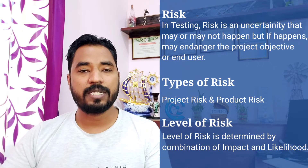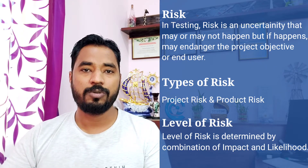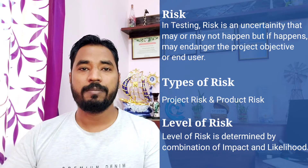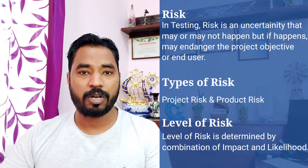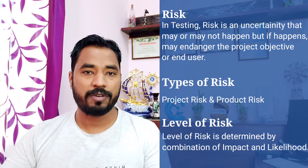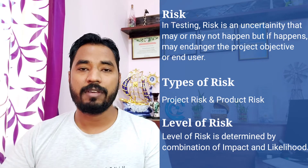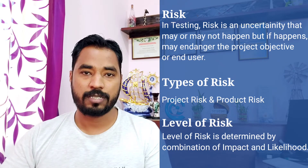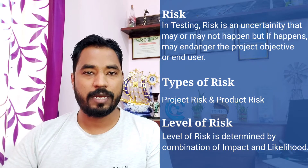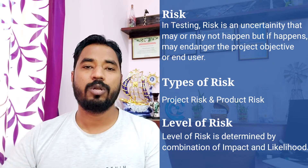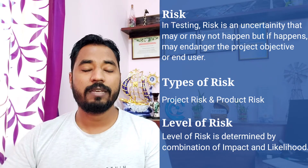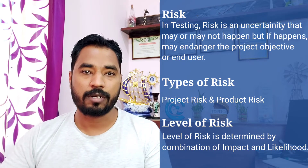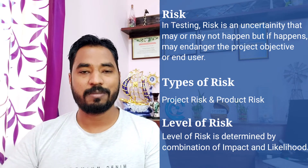Some sample examples of product risk include error-prone software delivered, or a BP monitor — that is, blood pressure monitor — showing a wrong reading, or a weighing machine having a calibration issue. These are called product risks. Anything which impacts the end user is called a product risk, whereas anything which impacts the process of making the product is called a project risk.